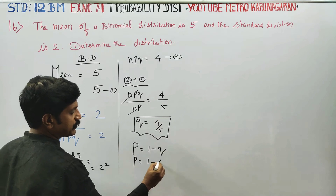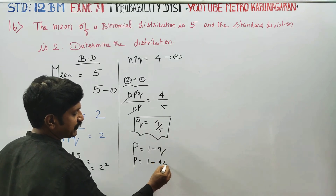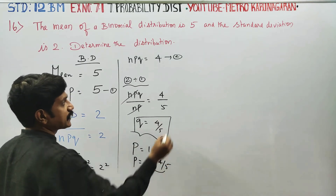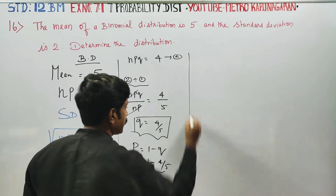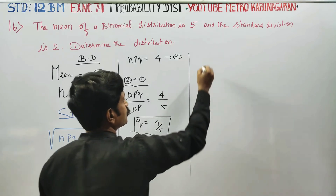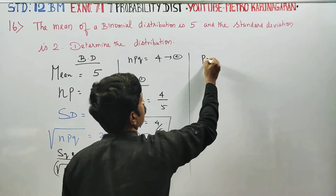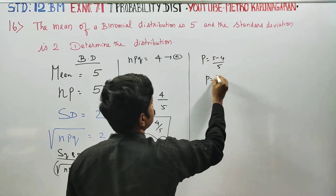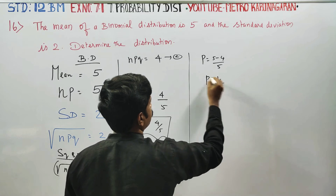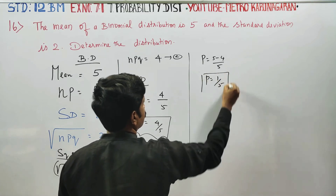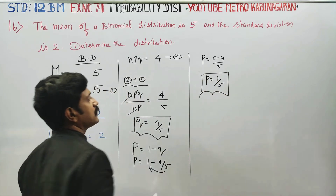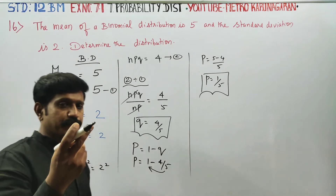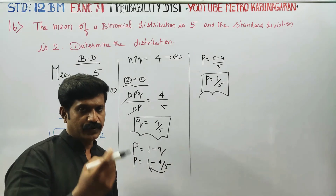p is equal to 1 minus 4 by 5, which gives p equal to 1 by 5. The binomial distribution parameter p is 1 by 5.